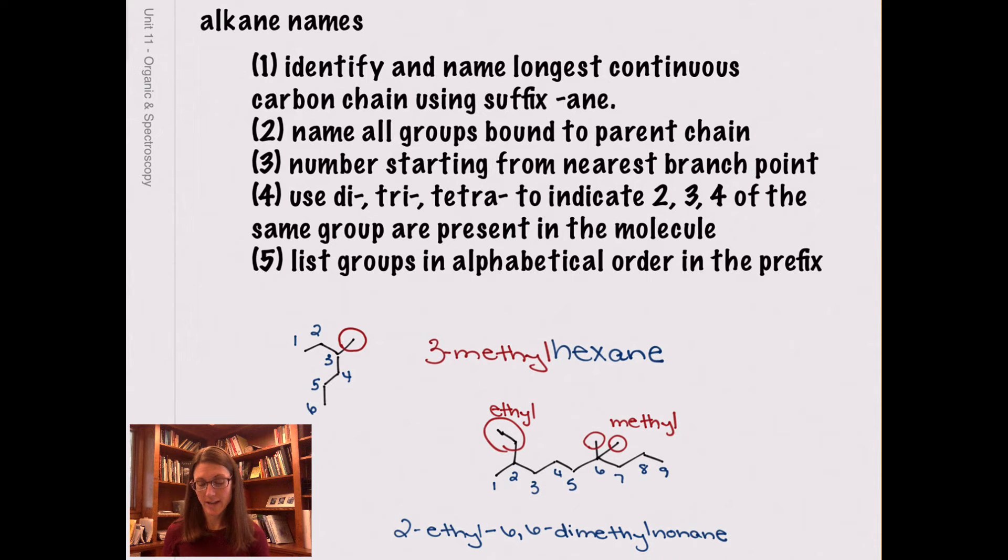For our last example on this slide, this lovely molecule that I drew would be named 2-ethyl-6,6-dimethyl-nonane. Nine carbons in the longest carbon chain. It is an alkane, so the ending is A-N-E. And then I have three different substituents. I need to tell people how many carbons are in each of those substituent chains as well as what location they are attached to. And then I put ethyl first because ethyl comes before methyl in terms of alphabetical order. The di- and tri- doesn't impact alphabetical order. I promise we're going to practice more in class.